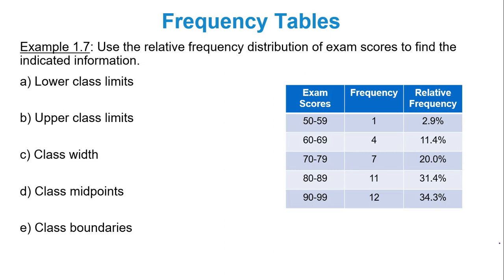Use the relative frequency distribution of exam scores to find the indicated information. Where are the lower class limits? That is the smallest number in every single class. We have five classes, we need five lower class limits. So we have 50, 60, 70, 80, 90.